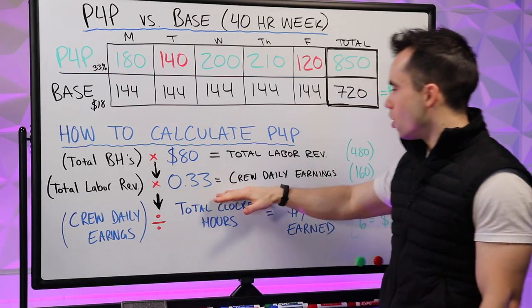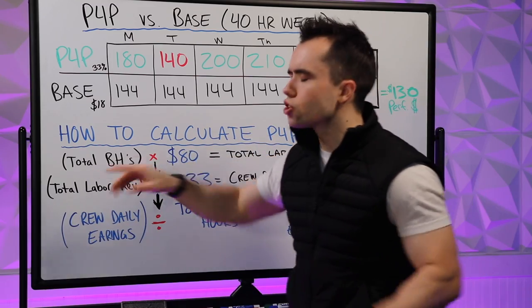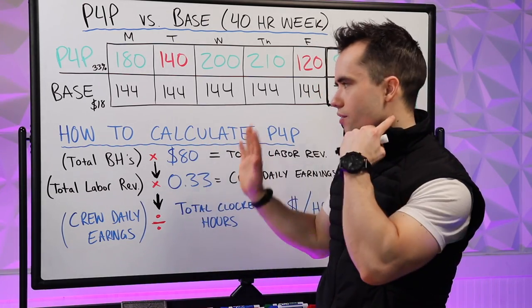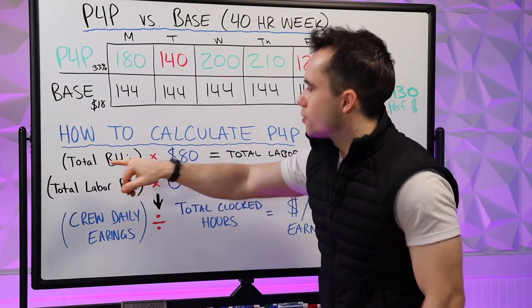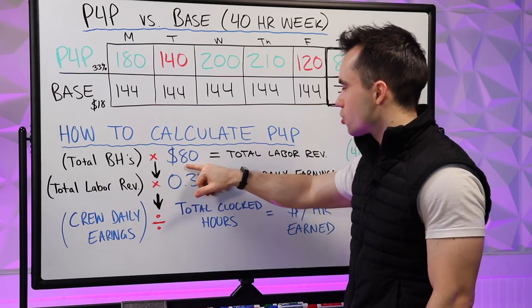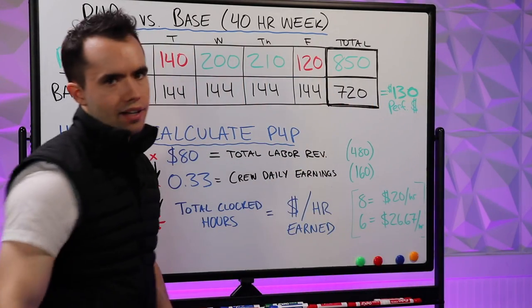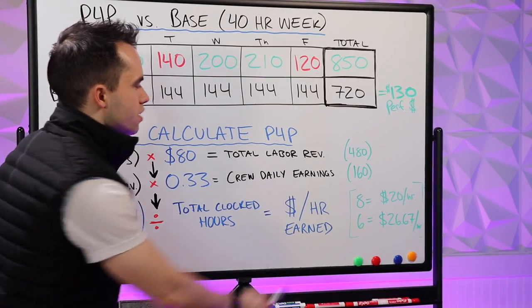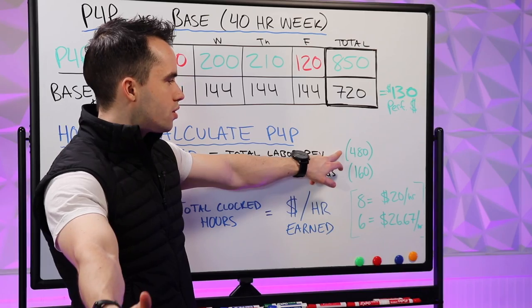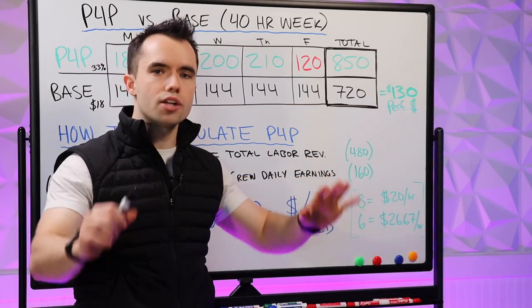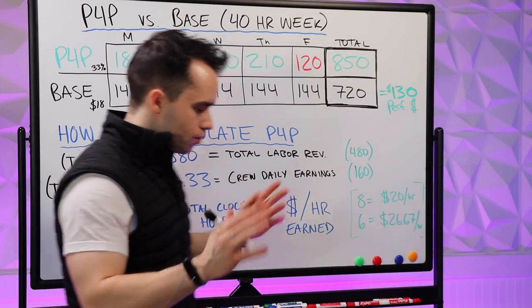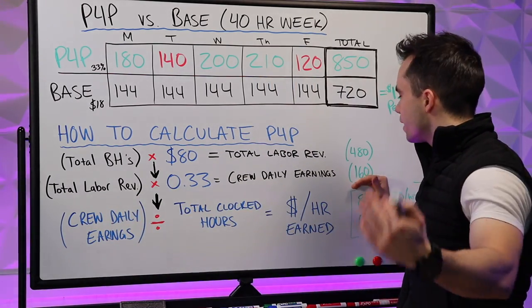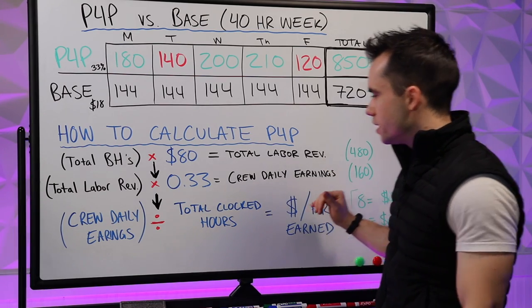Now we go to crew daily earnings. Let's run some actual numbers. Assume there were six total budget hours completed in one day's work — could be a mowing route, a project, cleanup, whatever. Six budget hours multiplied by $80 — what I'm charging the customer per hour — gives total labor revenue of $480. If I take that $480 and multiply by one third, that's $160 going to my employees for this day, no matter what. Now we can break this down to what they're actually making per hour. If you take the crew's daily earnings divided by total clocked hours — and we're assuming a one-person crew — that's where the money is made on P4P.